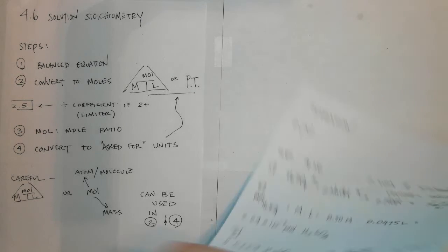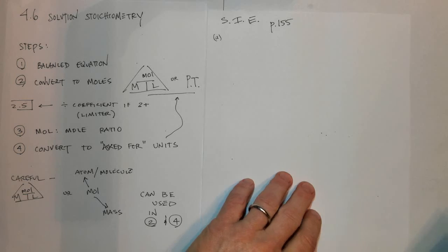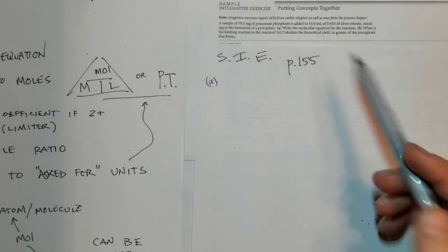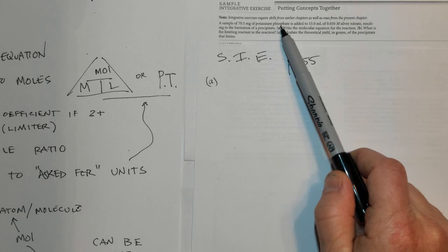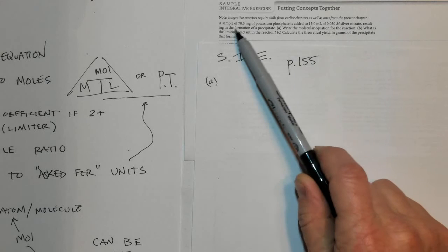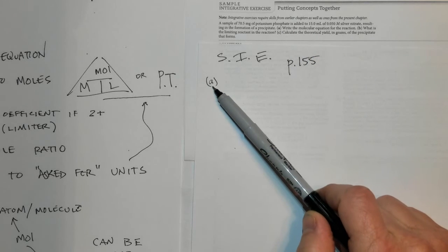The last problem is a sample integrated exercise on page 155 of the 13th edition — it's a tough solution stoichiometry problem involving many steps. The problem: a sample of 70.5 milligrams of potassium phosphate is added to 15 milliliters of 0.05 molar silver nitrate, resulting in the formation of a precipitate. Part A: write the molecular equation for the reaction — that might be the toughest part of the whole problem.